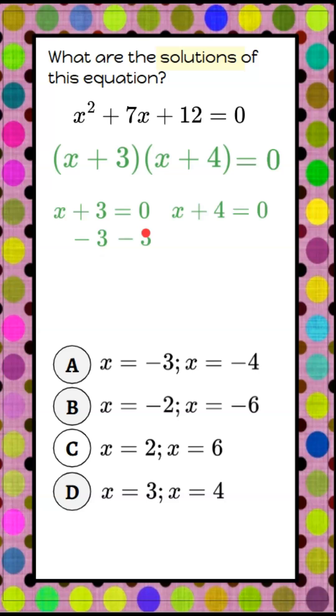So I'm going to subtract 3 from both sides, and that is going to give me x is equal to negative 3. Here I'm going to subtract 4 from both sides, and that's going to give me x equals negative 4.